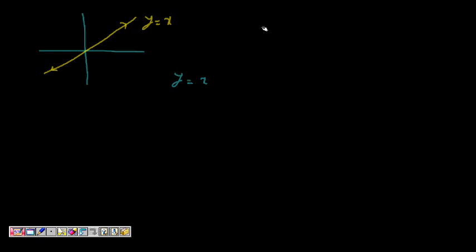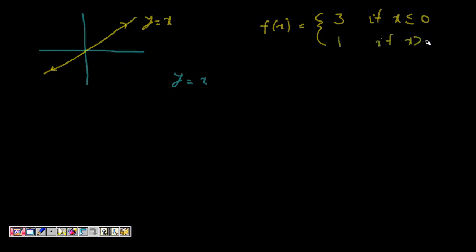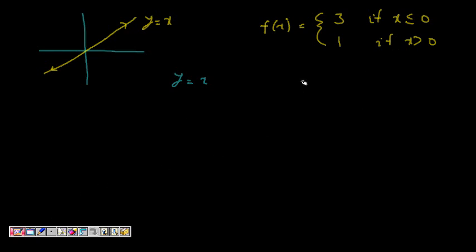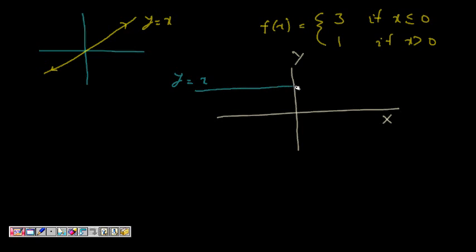Now let's look at a function which is defined as f(x) equals 3 if x is less than or equal to 0, and equals 1 if x is greater than 0. Let's try to plot this function and see what happens. So this is the x-axis and y-axis. f(x) equals 3 if x is less than or equal to 0.